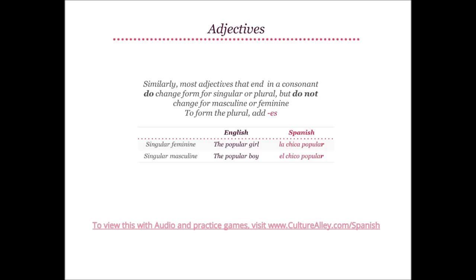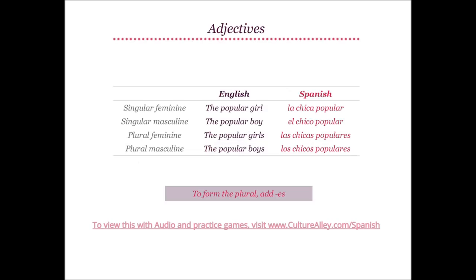Most adjectives that end in a consonant also do not change for masculine or feminine, but change form for singular or plural — and to form the plural, add -es. For example, the popular girl will be la chica popular; the popular boy becomes el chico popular — in both cases, popular stays as popular. The plural feminine form, the popular girls, becomes las chicas populares. The popular boys is los chicos populares. To form the plural for adjectives ending in consonants, add -es.